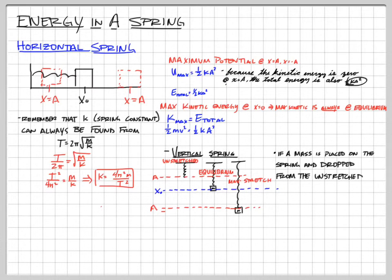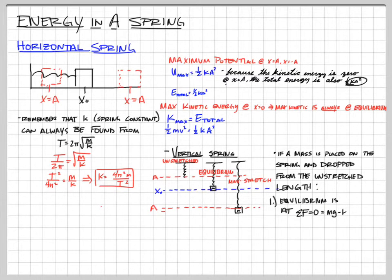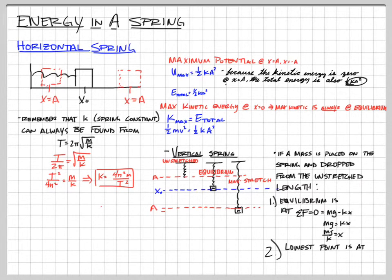Given the spring constant, we can find the equilibrium position — that's where the net force equals zero, where gravity and the spring force balance each other. We can find the stretch to equilibrium by just doing mg/k. At the lowest point, all gravitational potential energy is turning into spring potential energy, so we set gravitational PE equal to spring PE, and by solving those two equations we can find the amplitude and the lowest point.